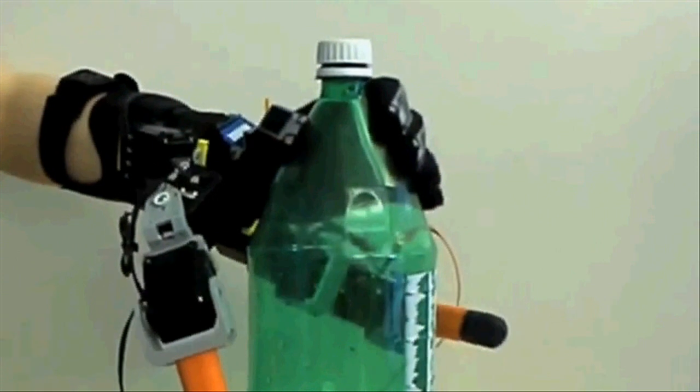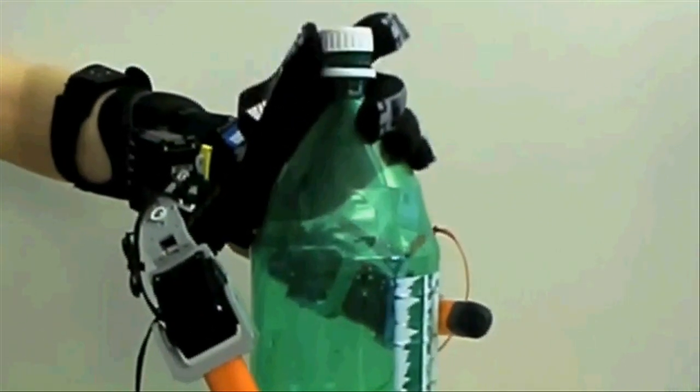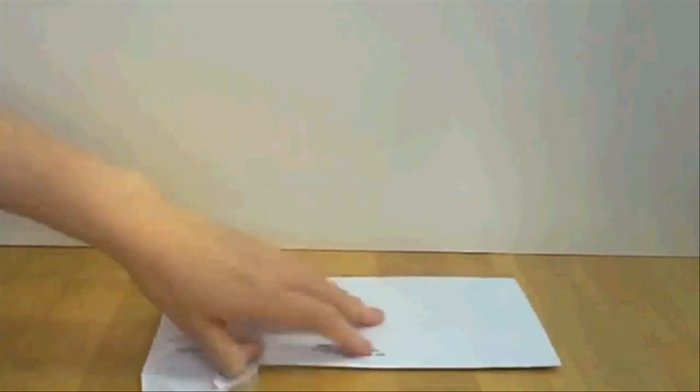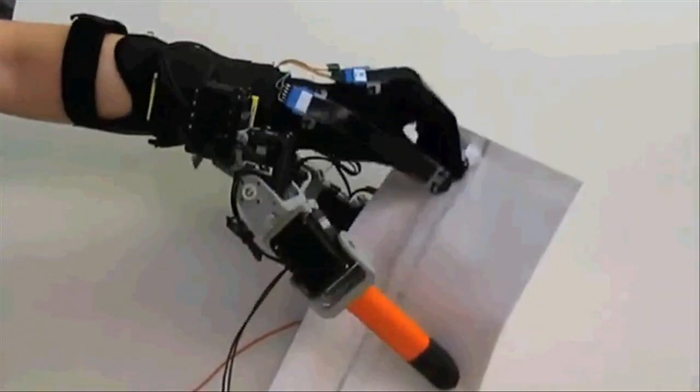You can also perform tasks that usually require two hands with a single hand. For example, taking the cap of a bottle or opening a letter. For elderly or people with disabilities, these fingers can help them to enjoy a living much more independently.